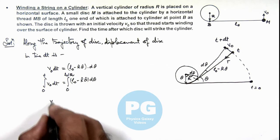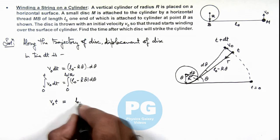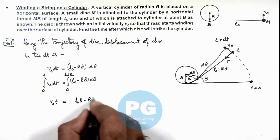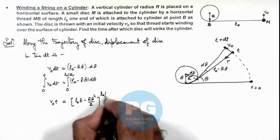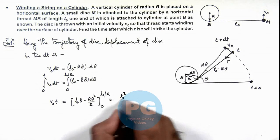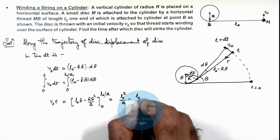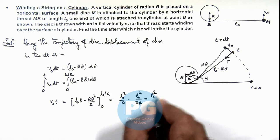So on the left-hand side it will be v₀t, and on the right-hand side on integrating this, L₀θ - Rθ²/2, and we substitute the limits from 0 to L₀/R, which will give us L₀²/R - L₀²/2R, which is L₀²/2R.